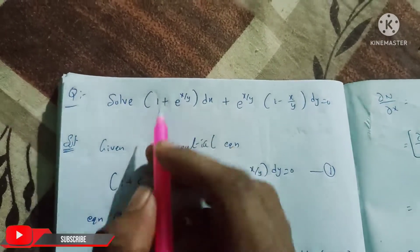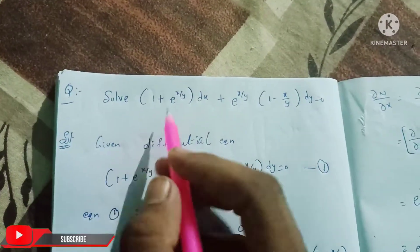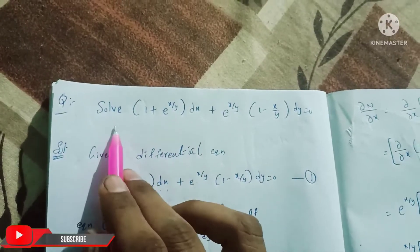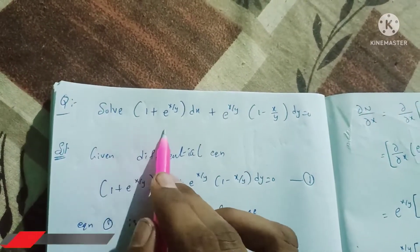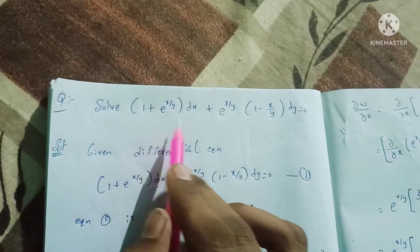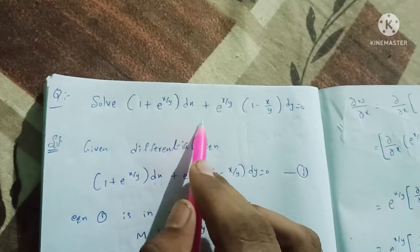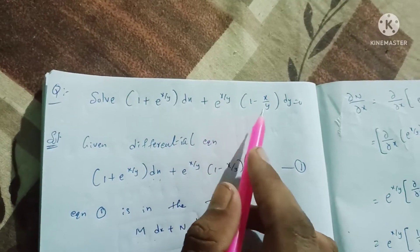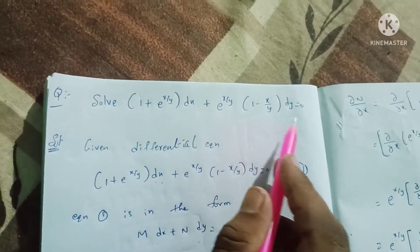First time differential equation in the chapter. This is a 10 marks important question. Solve: 1 plus e power x by y into dx plus e power x by y into 1 minus x by y into dy is equal to 0.